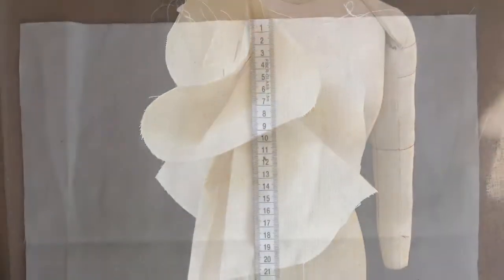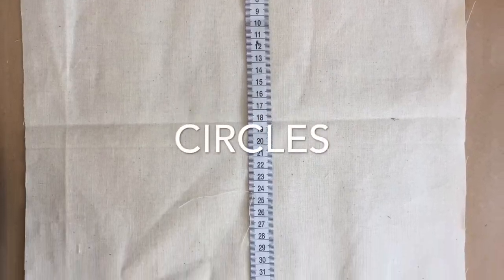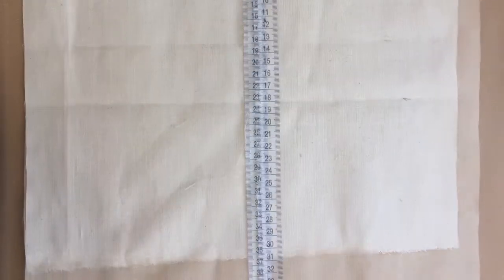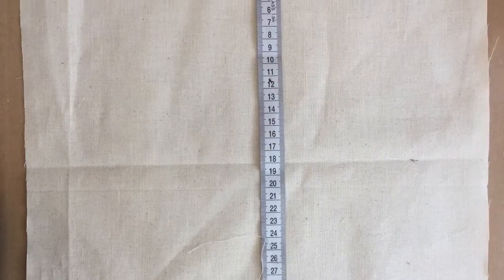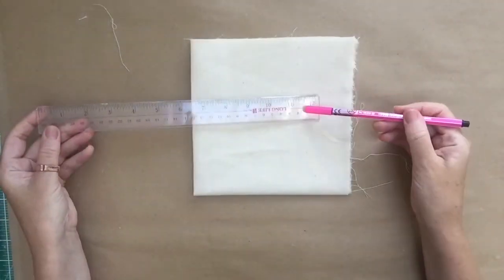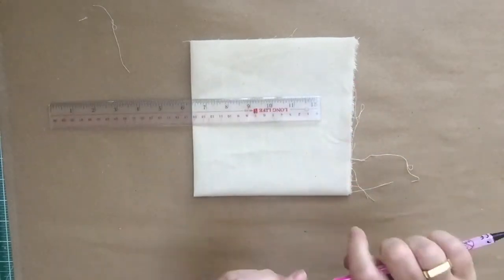To start, we need a square of calico approximately 36 by 36 centimeters wide. We then want to divide that into four, so fold it into four, and the center of that fold is going to be the center of the circle.